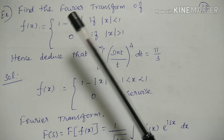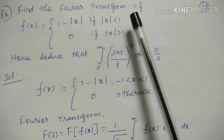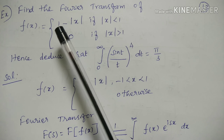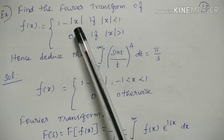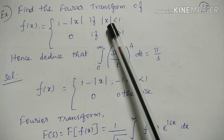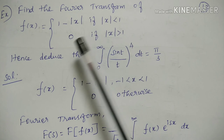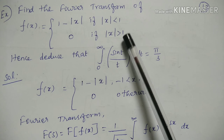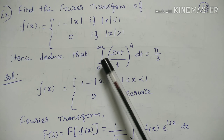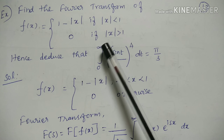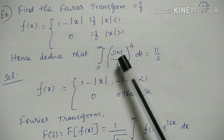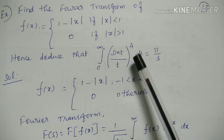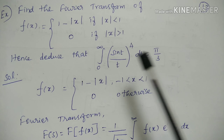Next example problem: Find the Fourier transform of f(x) = 1 − |x| if |x| < 1, and 0 if |x| > 1. Hence deduce that the integral from 0 to infinity of (sin t / t)⁴ dt is equal to π/3.